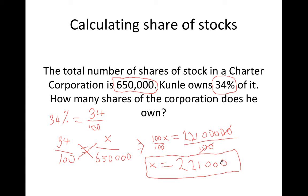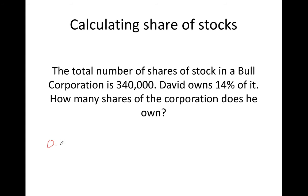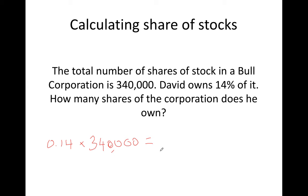Final question: the total number of shares of stock in the Bull Corporation is 340,000. David owns 14% of it. How many shares does David own? This is the same as the last one. We can take a shorter approach: convert 14% to its decimal value of 0.14, then multiply by 340,000, which gives you 47,600. So David owns 47,600 total shares. If you have any questions, let me know. Thank you!